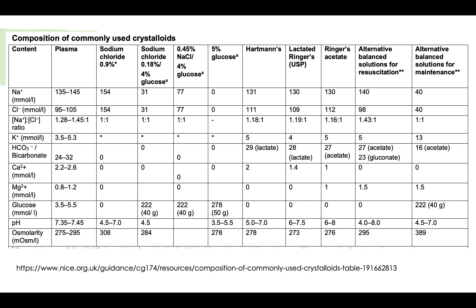Glucose is added to this solution to make it isotonic. If you put a hypotonic solution into the blood, it causes the blood cells to swell and burst. You cannot put a hypotonic solution — or plain water — directly into the blood, so glucose is added to make it safe.